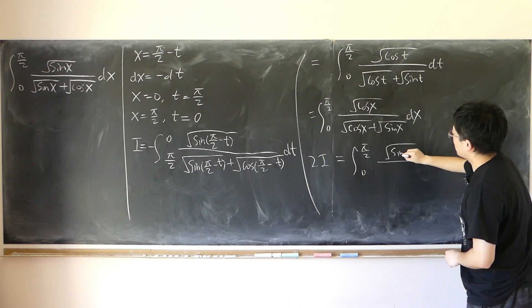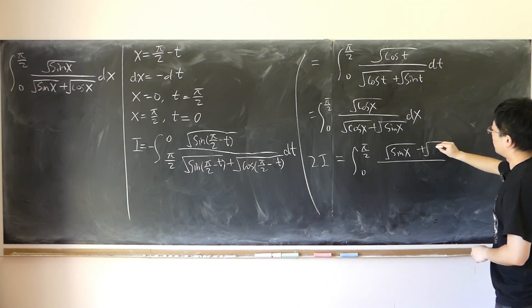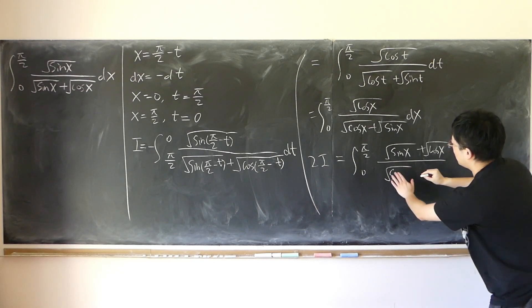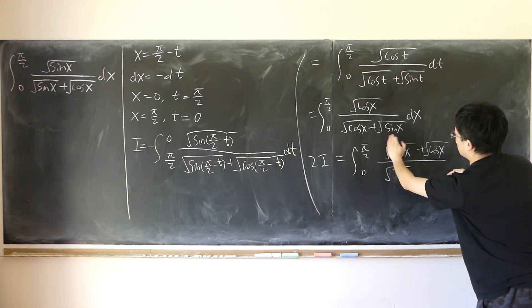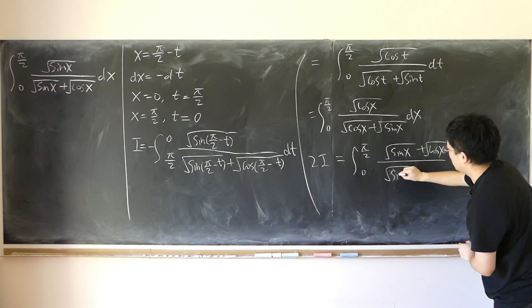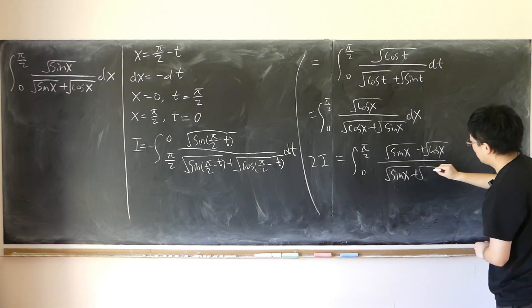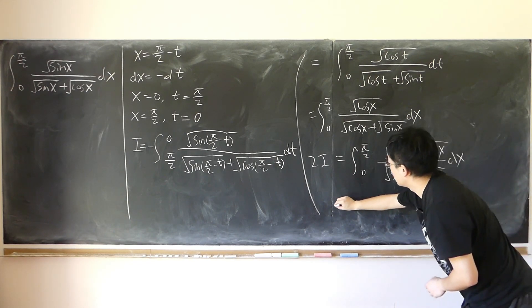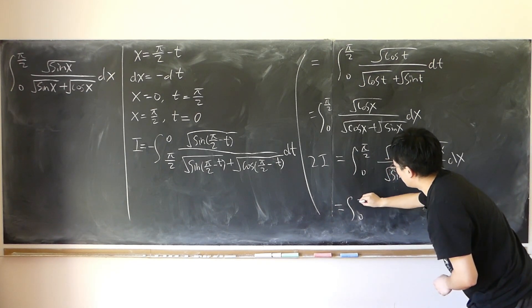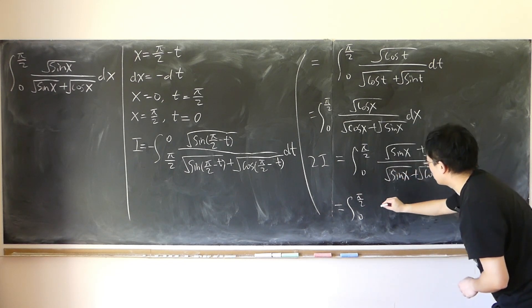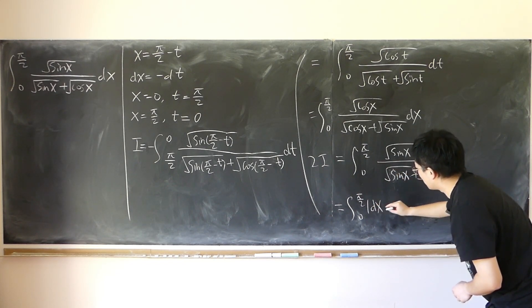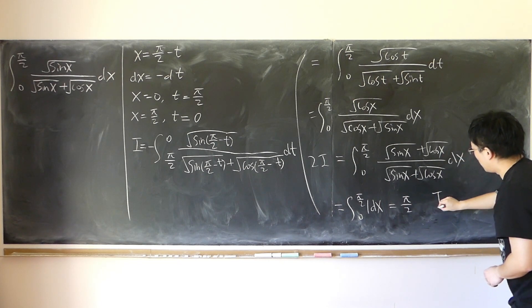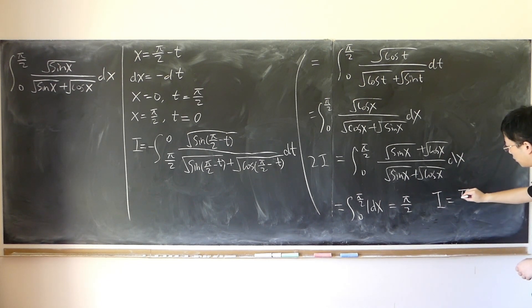Square root of sine x plus square root of cosine x. Square root of cosine x plus square root of sine x. Same thing. So that becomes 0 to half pi dx. So that's exactly half pi. So I is in fact pi over 4.